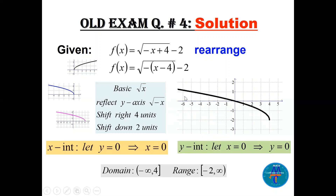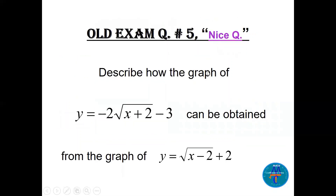The final graph also shifts down by 2 (the −2 outside). This is not easy to get directly — going step by step is a nice method: start with the basic, apply the reflection, then apply the shift. The x-intercept is at y = 0, the y-intercept at x = 0. The domain is (−∞, 4] and the range is [−2, +∞).